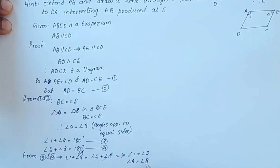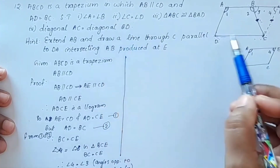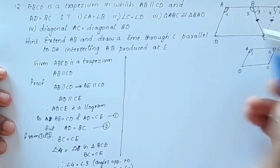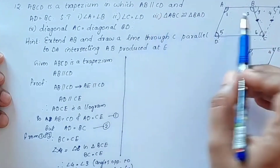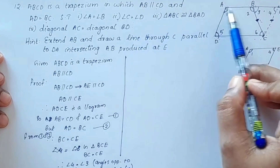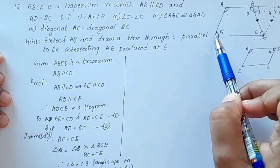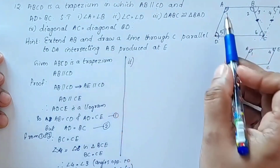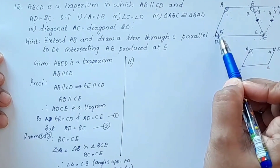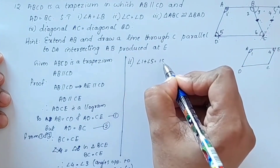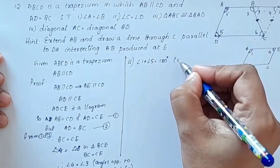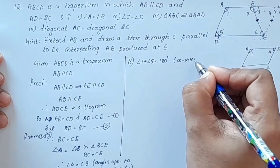Angle A is equal to angle B. Now the second part: we need to prove angle C is equal to angle D. These are angle 5 and angle 6. AB is parallel to CD. AD is the transversal, so angle 1 plus angle 5 equals 180 degrees — co-interior angles are supplementary.